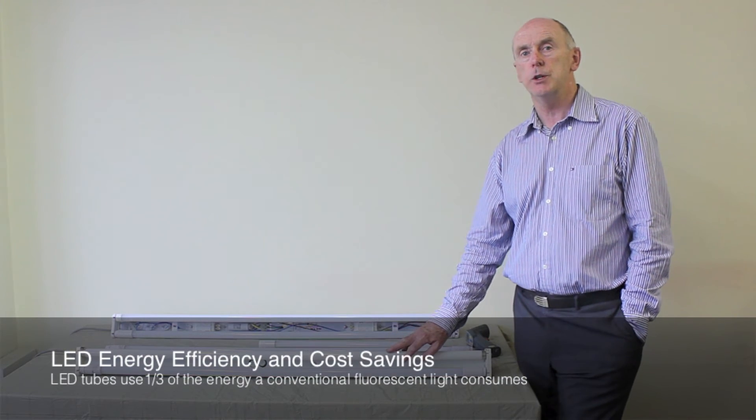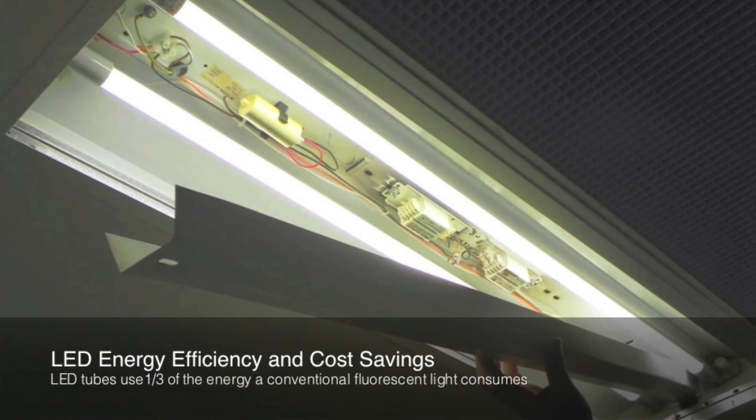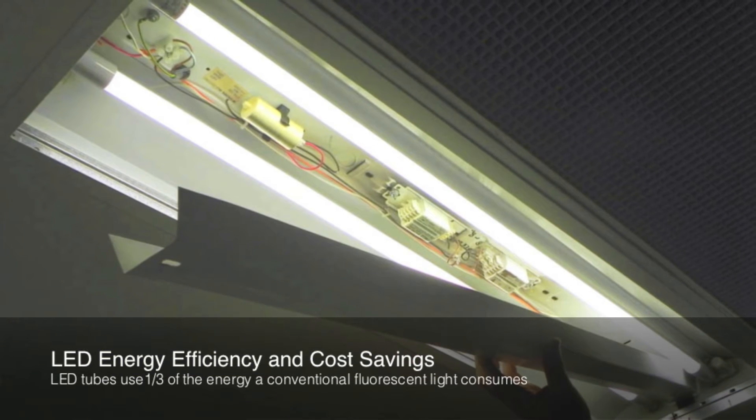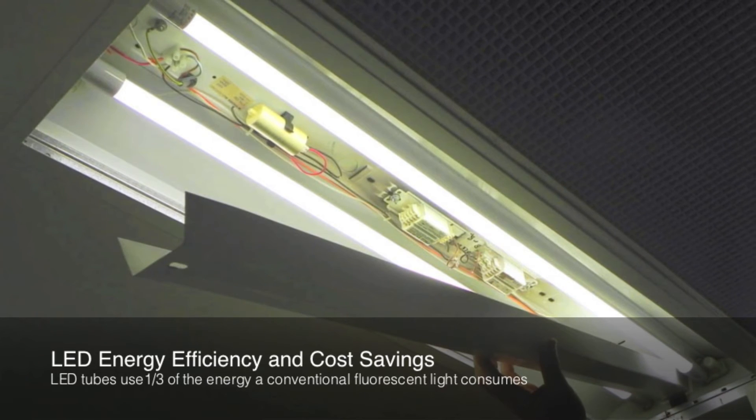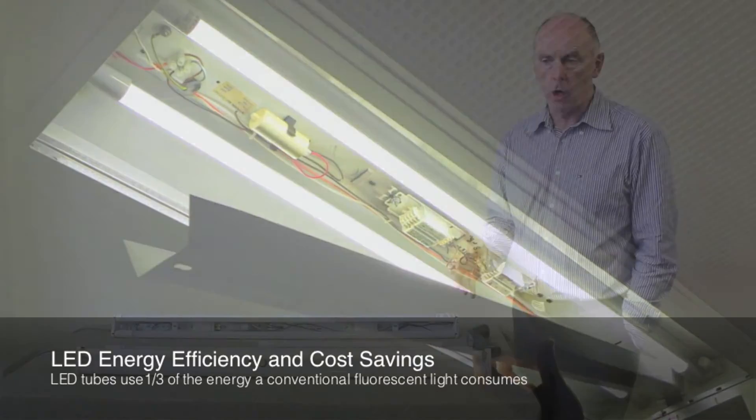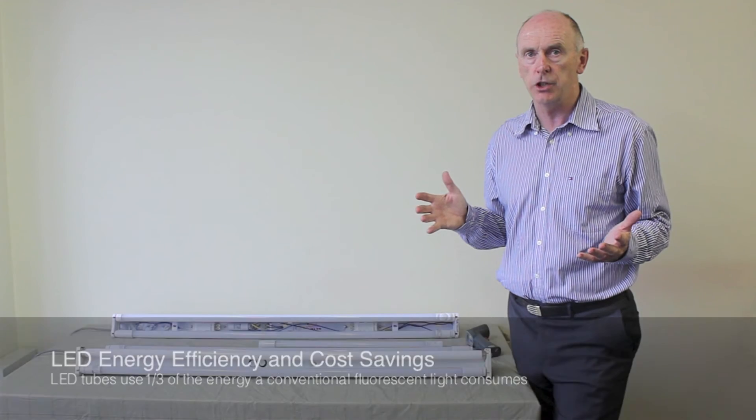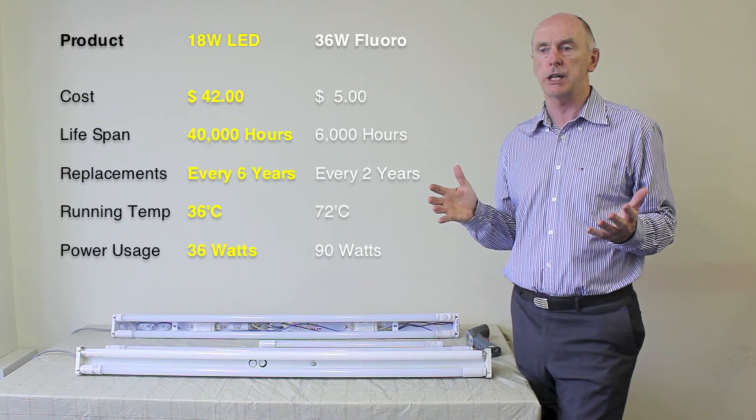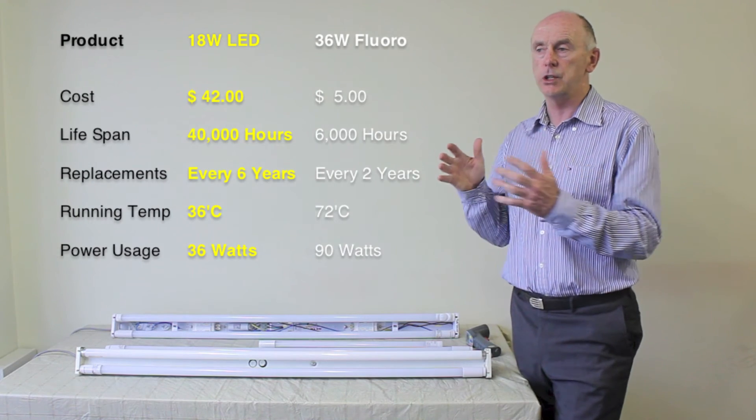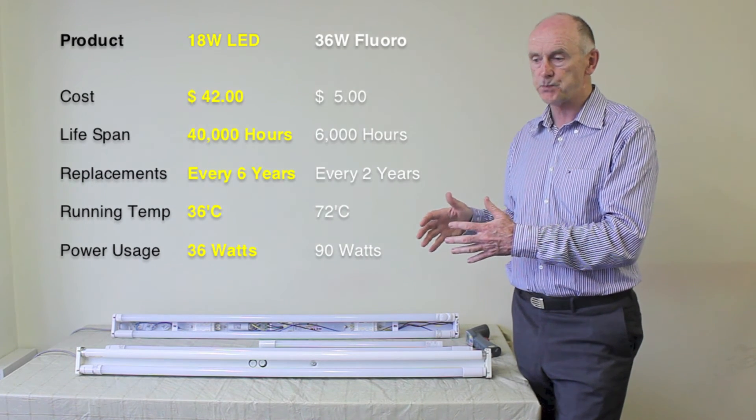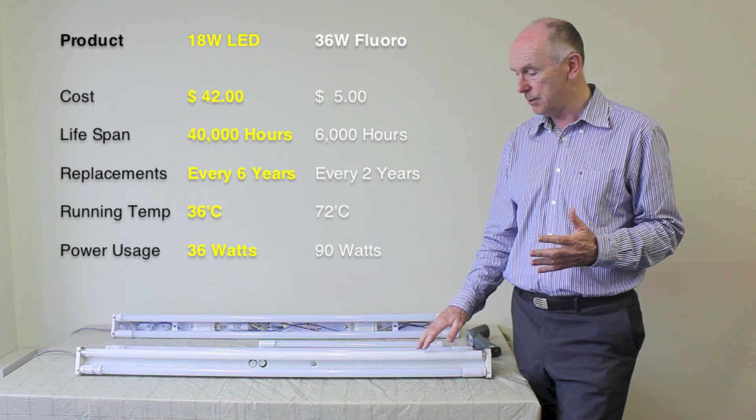If a fluorescent tube has a magnetic ballast and a conventional starter, and it's a double fitting, 1200 millimeter long, 36 watts per light means that you think that 36 times 2 is 72 watts is how much power it's actually drawing. Well, what you don't realize is that it's actually drawing a lot more because of the two ballasts that are in there, the magnetic ballast. The two magnetic ballasts means that it could be pulling up to close to 90 watts as a double fitting.